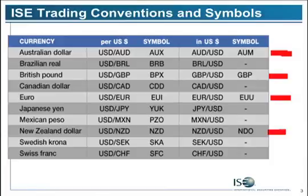The four symbols we added about a year ago are similar to the spot currency convention, where the Australian dollar, British pound, euro, and New Zealand dollar are the base currencies in the spot market. The other ones — the Brazilian real, Canadian dollar, Japanese yen, Mexican peso, Swedish krona, and Swiss franc — are all dollar-based.